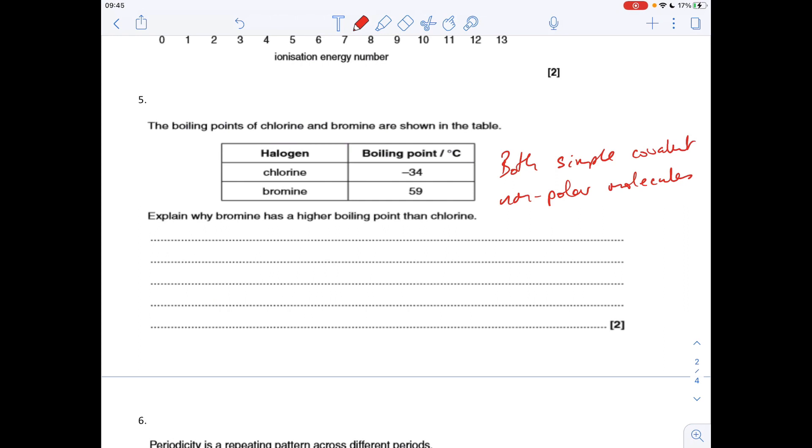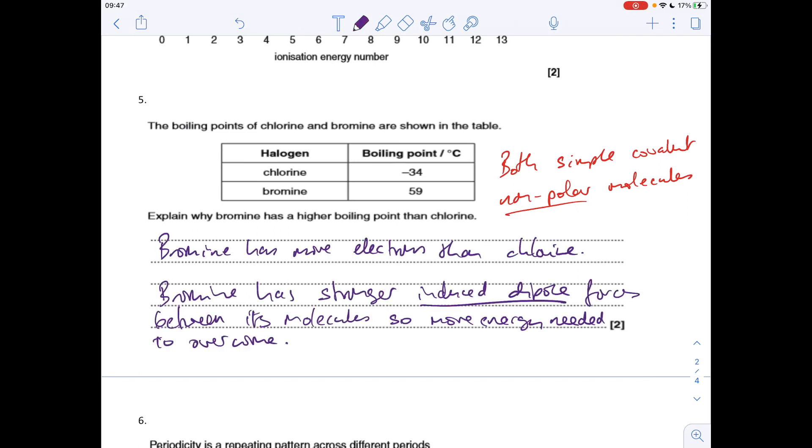Question five. I've already written up the fact that chlorine and bromine are both simple covalent, non-polar molecules. So the intermolecular forces that need to be broken to get these to boil are induced dipole forces. If you remember, the strength of the induced dipole force increases with the number of electrons in the molecule. So the answer to this is bromine's got more electrons than chlorine, so bromine has stronger induced dipole forces. Got to mention specifically the type of intermolecular force between its molecules, so more energy is needed to overcome them.